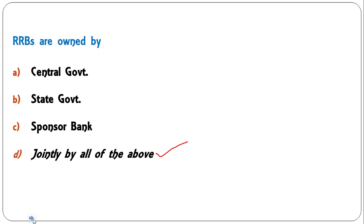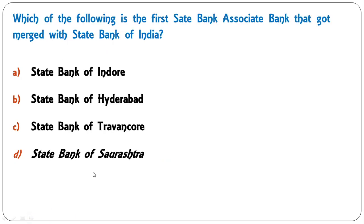Which of the following is the first State Bank associate that got merged with State Bank of India? Options are State Bank of Indore, State Bank of Hyderabad, State Bank of Travancore, or State Bank of Saurashtra. The correct answer is D — State Bank of Saurashtra, which was merged with SBI in 2008.